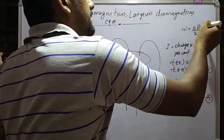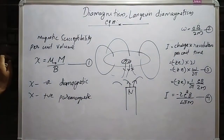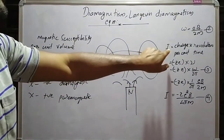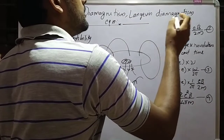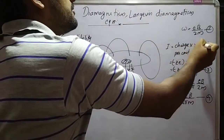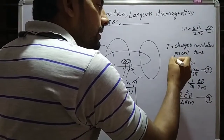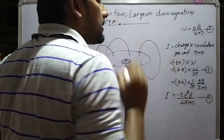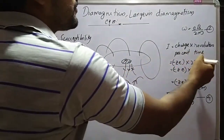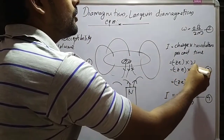The angular frequency of electrons around the nucleus is omega equal to eB over 2m, where B is the applied magnetic field intensity, m is the mass of the electron, and e is the charge of the electron. The current i is equal to charge per unit time, or charge times frequency. If there are Z electrons, then the total charge is minus Ze times the frequency nu.